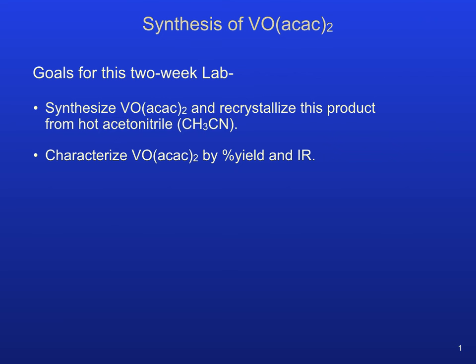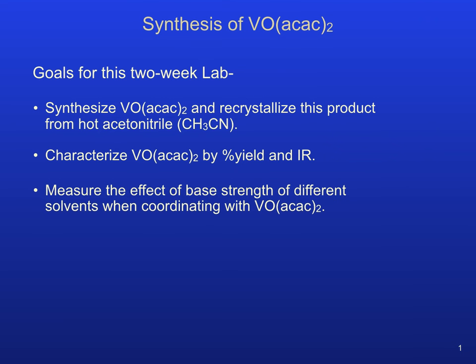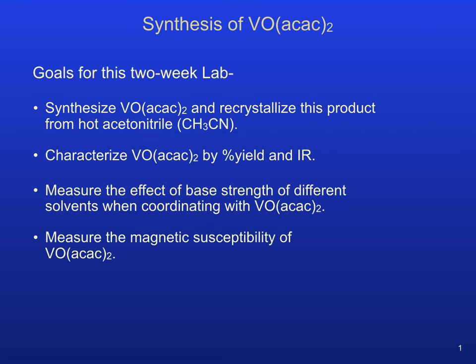The prefix bis is used to denote the presence of two bidentate ac-ac ligands in this transition metal complex. You will dissolve your purified vanadyl-bis-ac-ac in a series of solvents and determine their relative strengths as Lewis bases by comparing the UV-vis of your product dissolved in each solvent. You will eventually measure the magnetic susceptibility of a solid sample of vanadyl-bis-acetylacetinate to determine the number of unpaired electrons present in this complex.